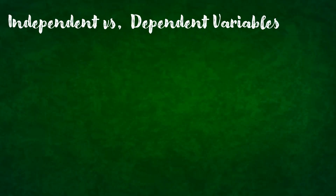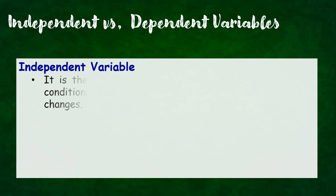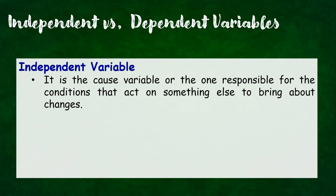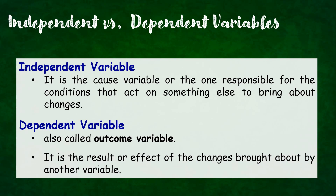A variable can also be classified as independent or dependent variable. Independent variable is the cause variable — the one responsible for the conditions that act on something else to bring out changes. While dependent variable is called the outcome variable — it is the result or effect of the changes brought by another variable. Ibig sabihin, ang nagkakos ng change ay ang independent variable, at ang effect naman nito, ito ang tinatawag nilang dependent variable.